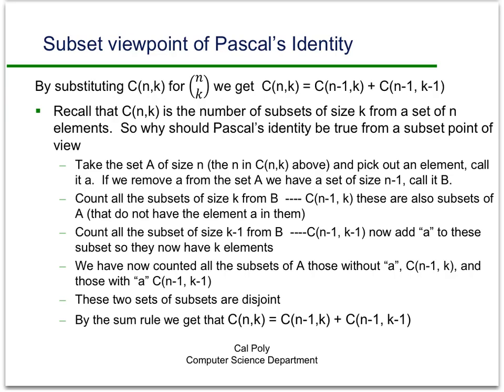So there's another way to get at Pascal's identity and that's to take a subset viewpoint. So we're going to forget all about binomial expansions here for a second and we're going to focus on our old perspective that the number of combinations of k things from n things, or another way to say that, the number of subsets of size k from a larger set of size n elements is written C(n,k). So because C(n,k) and binomial coefficient (n,k) are the same we better be able to show Pascal's identity to be true from a subset point of view.